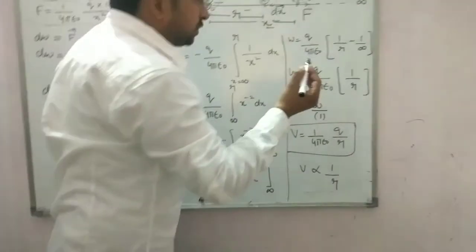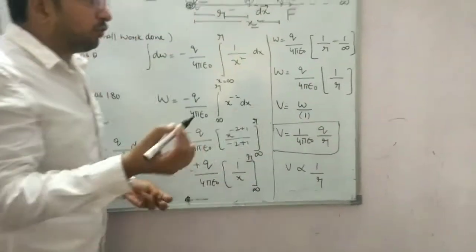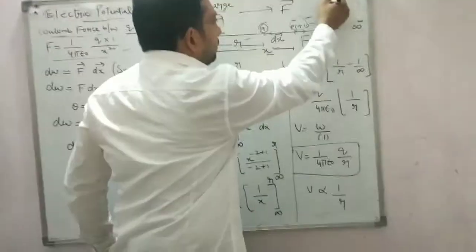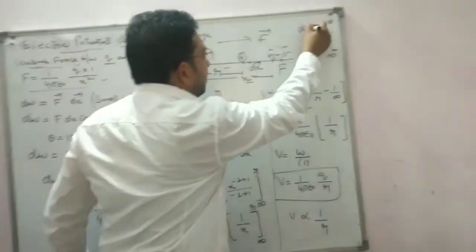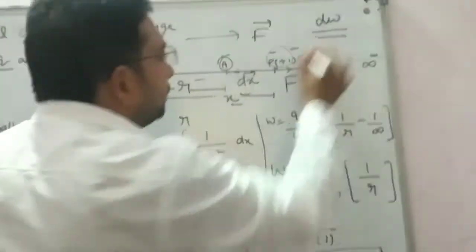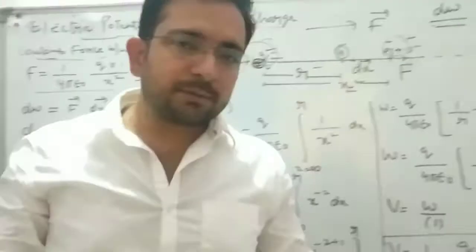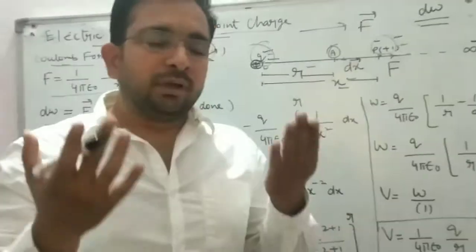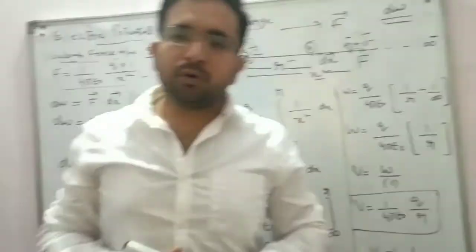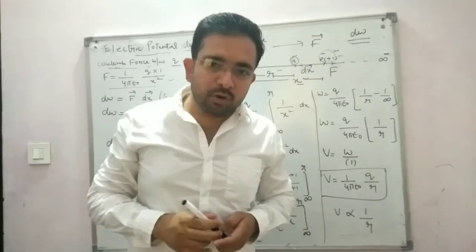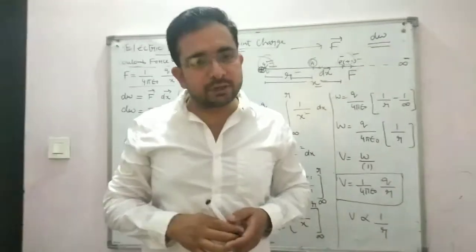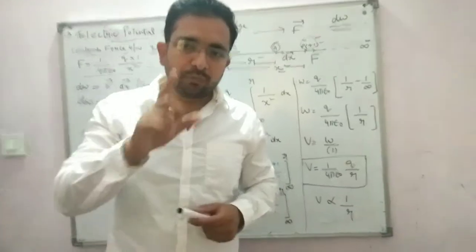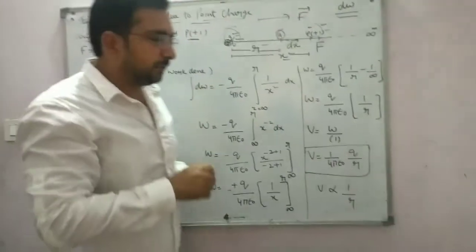We use a small amount of work done, dW. Here we use small work done dW, which is equal to force into displacement. Work done equals force into displacement.